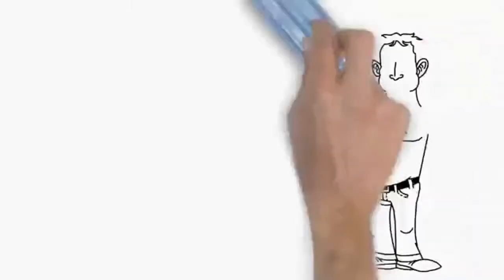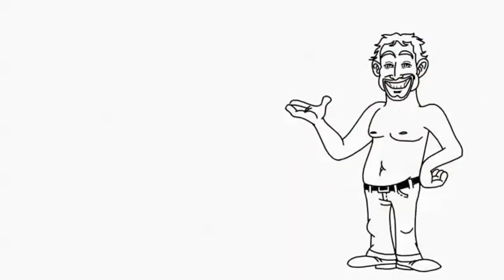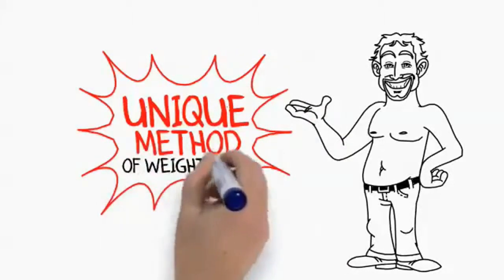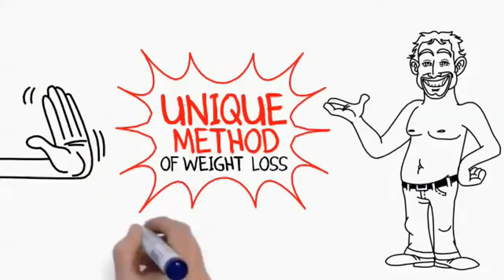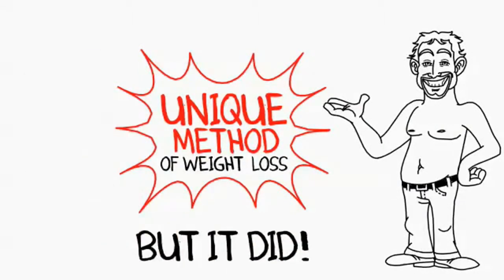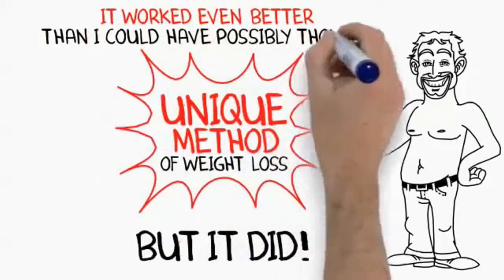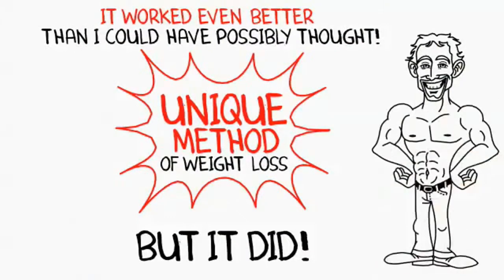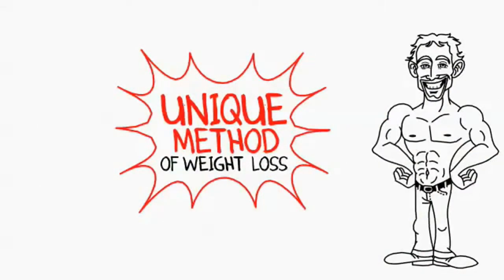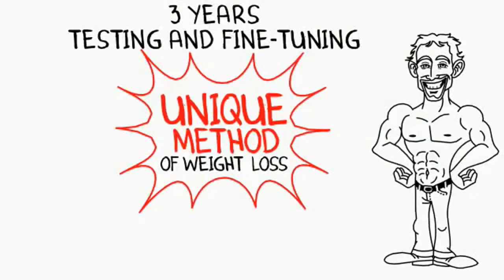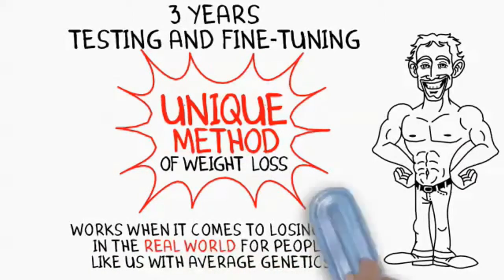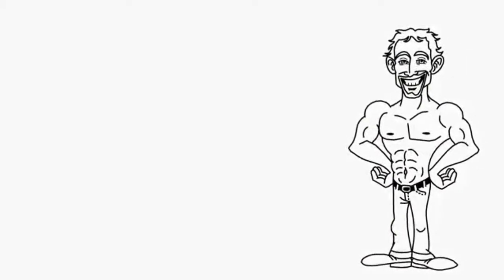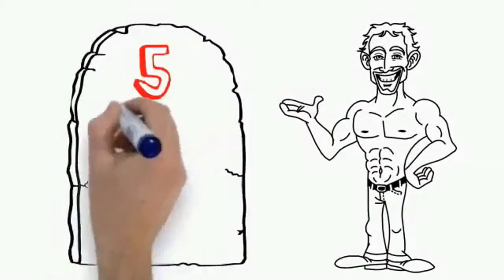Then, after years of failing at everything I tried, one day I stumbled on a unique method of weight loss I had never heard about. In fact, according to popular diet advice, there was no way it could possibly work, but it did. And after researching some more, I found multiple clinical studies proving why it worked even better than I could have possibly thought. First, I finally saw my abs for the first time in my life, and over the past three years, I've been testing and fine-tuning this method on myself and my closest friends. I discovered what really works when it comes to losing fat in the real world for people like us with average genetics. And now, I'd like to share with you my five forbidden commandments to lose stomach fat.